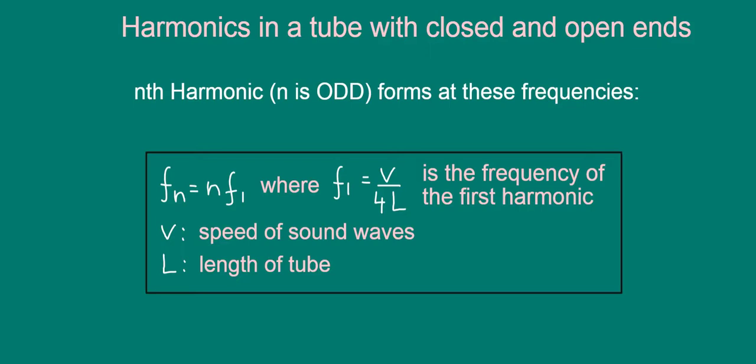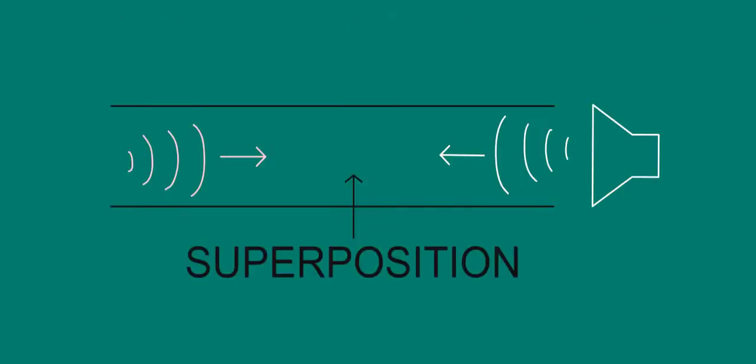Interestingly, stationary waves can also develop inside tubes with both ends open, what are known as open tubes. You might be surprised that sound waves can reflect from the left open end. But it's true, and you can learn why with a bit of research.